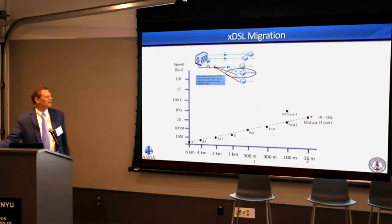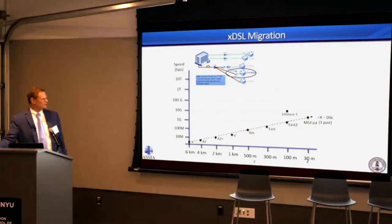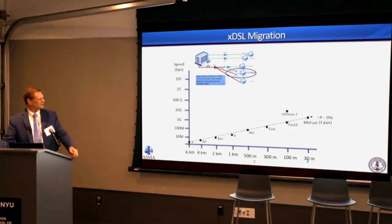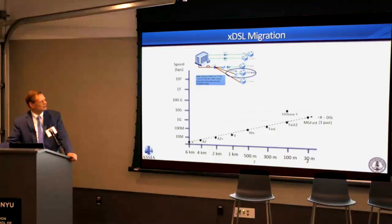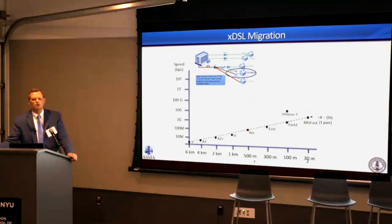This is a portion of the diagram that was up a few minutes ago. The horizontal axis shows distance — it gets shorter — and the vertical axis shows speed on a logarithmic scale. The dashed line shows DSL speeds increasing over the last 25 to 30 years, getting up to around 10 gigabits per second, but the distance over copper gets shorter each time.